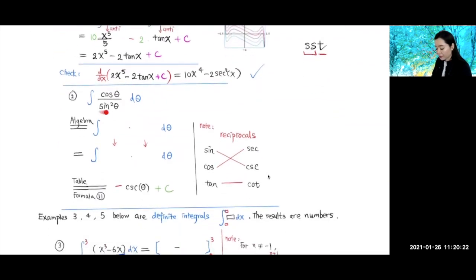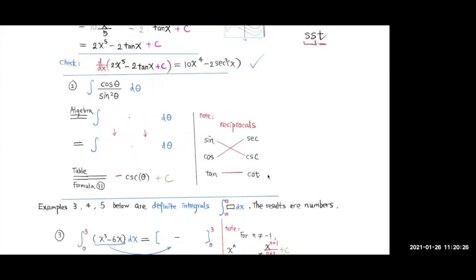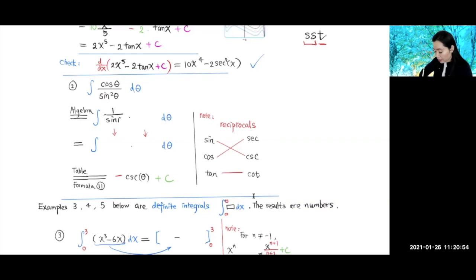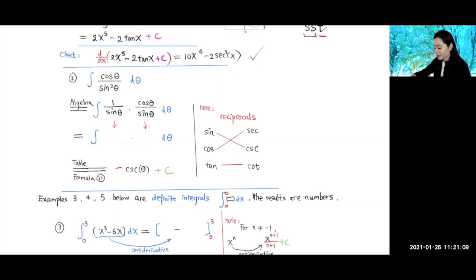Now the second example: we try to find the integral of this expression. Right now it doesn't match with any function in the antiderivative table. So let's do some algebra — try to separate this into one over sine theta times cosine theta over sine theta.